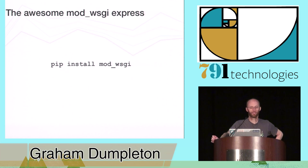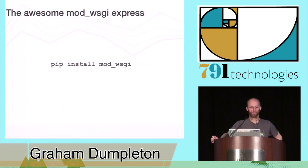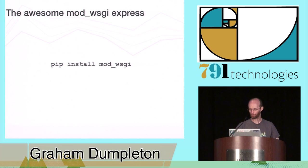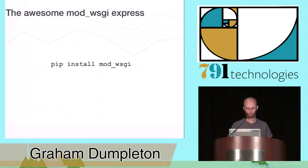You start off by installing mod_wsgi by running pip install mod_wsgi. If using macOS, it should all install with no issues. If you're on Linux, you may find you first have to install the Apache development package for your specific variant of Linux, because that isn't generally installed by default. As long as you've got your package manager in, that should be all, and you've got mod_wsgi installed.